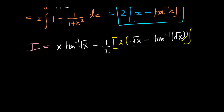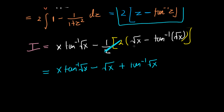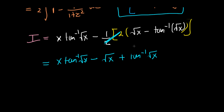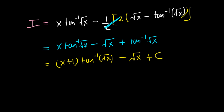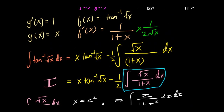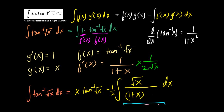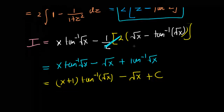Putting it all together: the integral equals x·arctan(√x) minus one-half times 2·(√x − arctan(√x)). The factor of 2 and one-half cancel. Expanding, we get x·arctan(√x) minus √x plus arctan(√x), which factors as (x+1)·arctan(√x) minus √x plus a constant C.